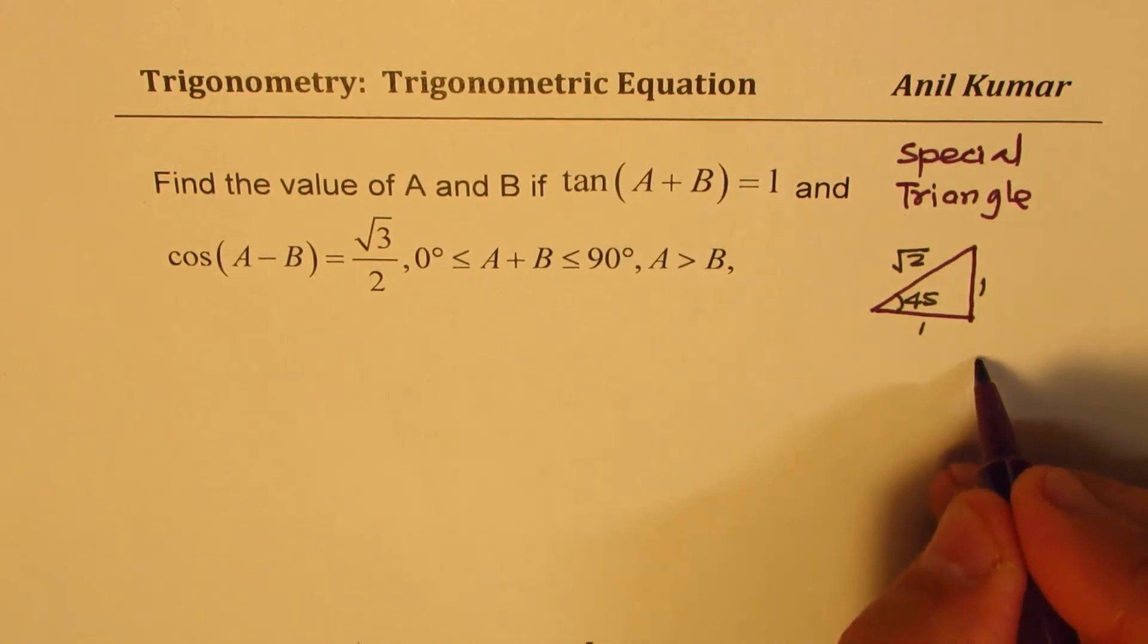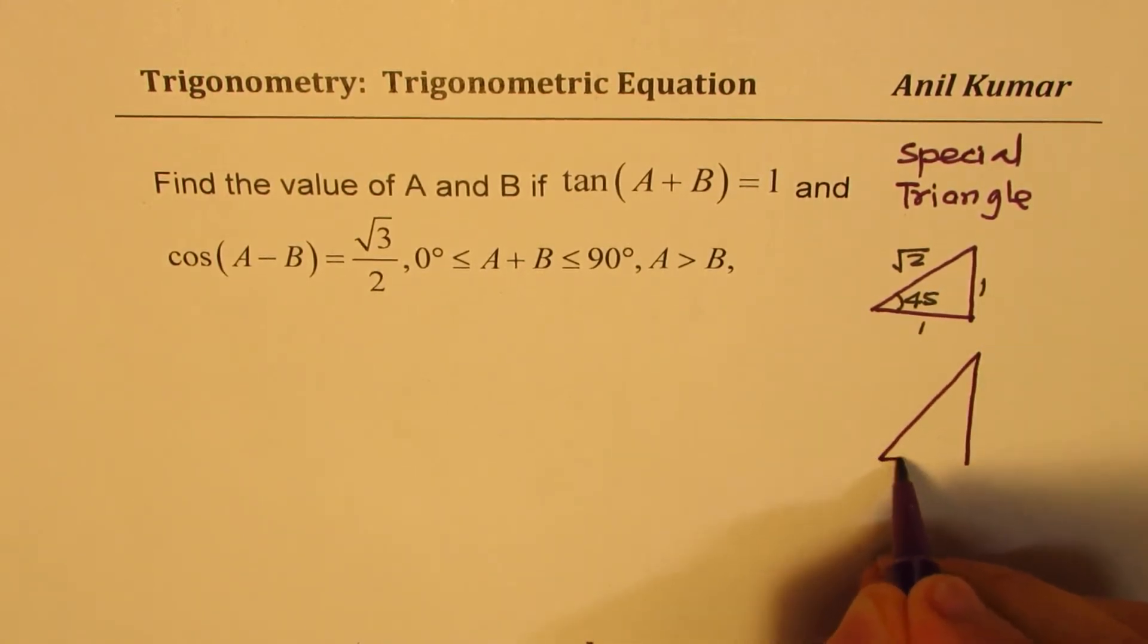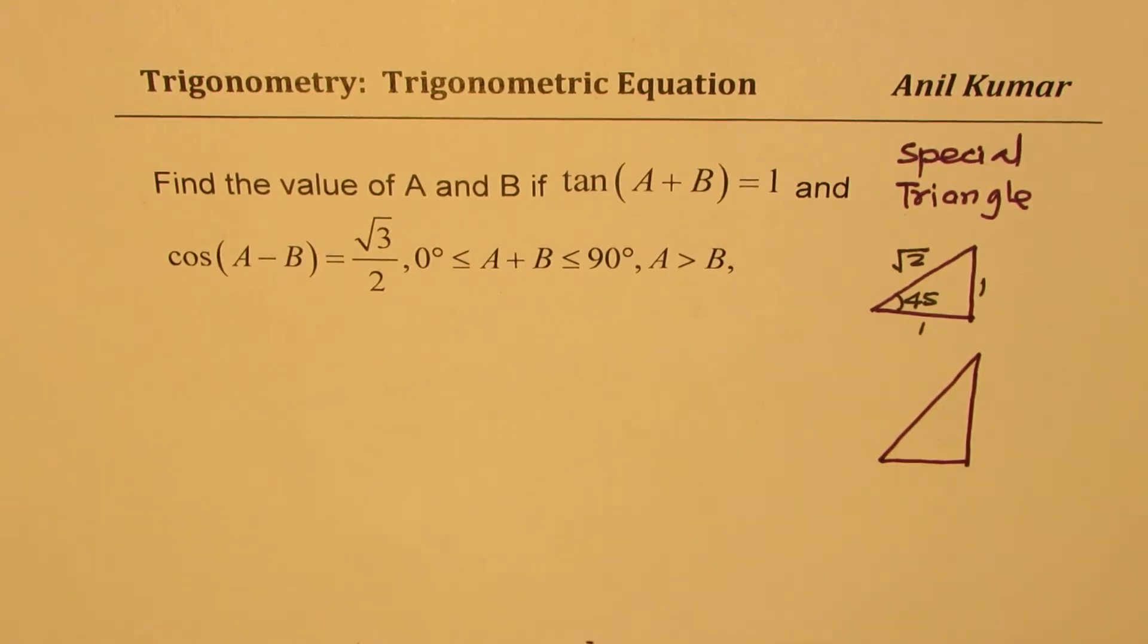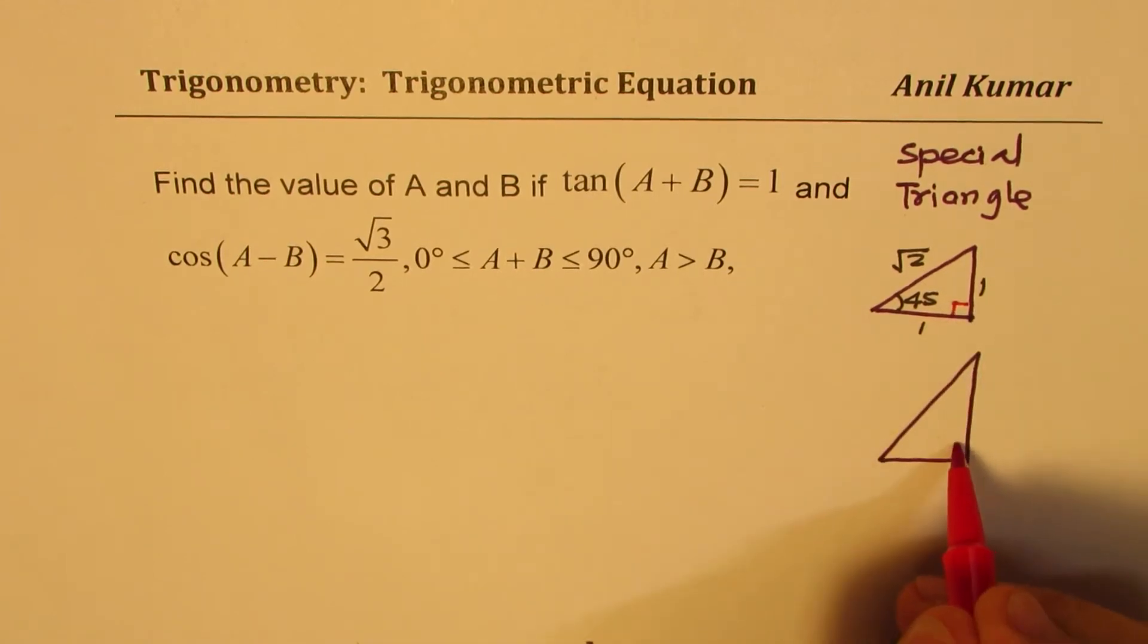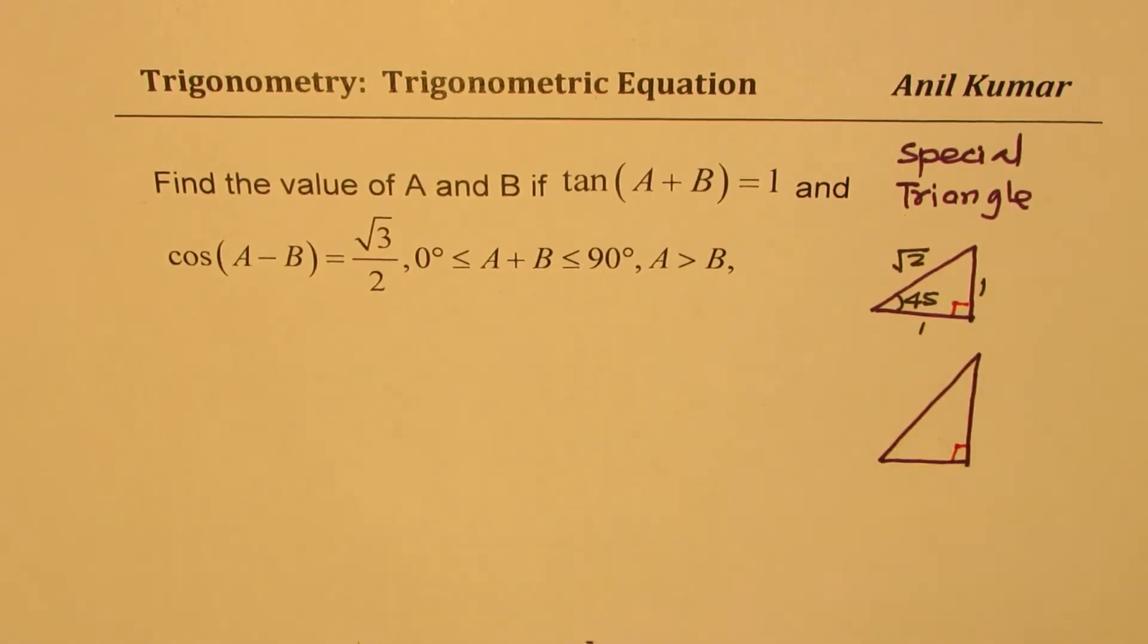The other special triangle is 30-60-90. Now these are the two triangles which you should always remember. As soon as you see the value of √3, don't think much. Just draw 30-60-90 triangle.